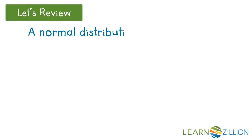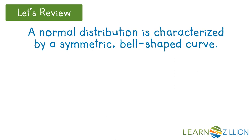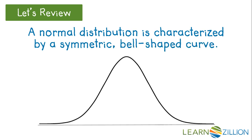First, let's review the characteristics of a normal distribution. Remember that a normal distribution is always going to be a symmetric, bell-shaped curve. Within that curve, your mean will always fall directly in the center, and the distribution should be balanced or symmetric on either side of the mean.